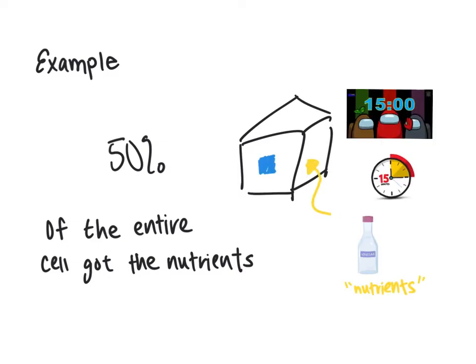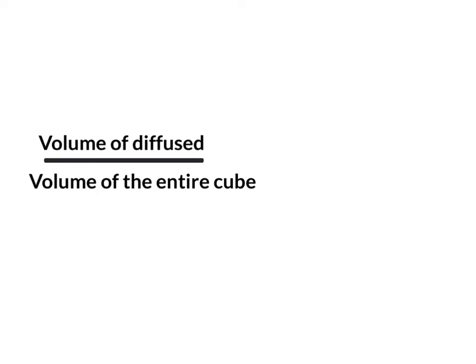So once you remember that, the formula really should make a lot of sense. You want to divide the volume of the diffused by the volume of the entire cube. This will give you a fraction that you're going to multiply by 100 to get a percentage.